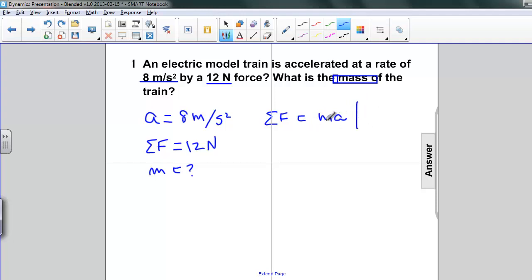So, to get mass by itself, we need to divide both sides by acceleration. And we get net force divided by acceleration equals mass times acceleration divided by acceleration.